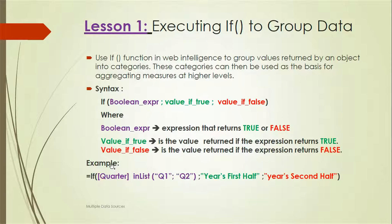For example: if ([Quarter] in list ("Q1";"Q2") : "Year's First Half" : "Year's Second Half"). If the quarter is Q1 or Q2, it assigns the value as Year's First Half. If this condition is false, like the quarter is Q3 or Q4, then it returns Year's Second Half. This is how we use the If function to group data into categories.